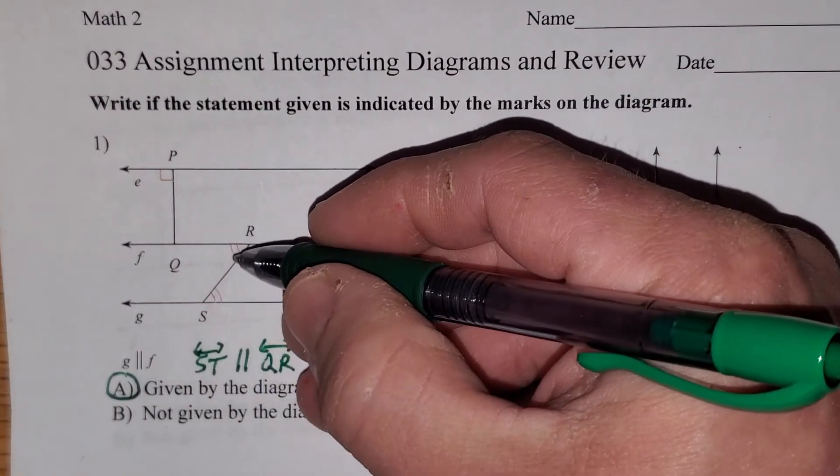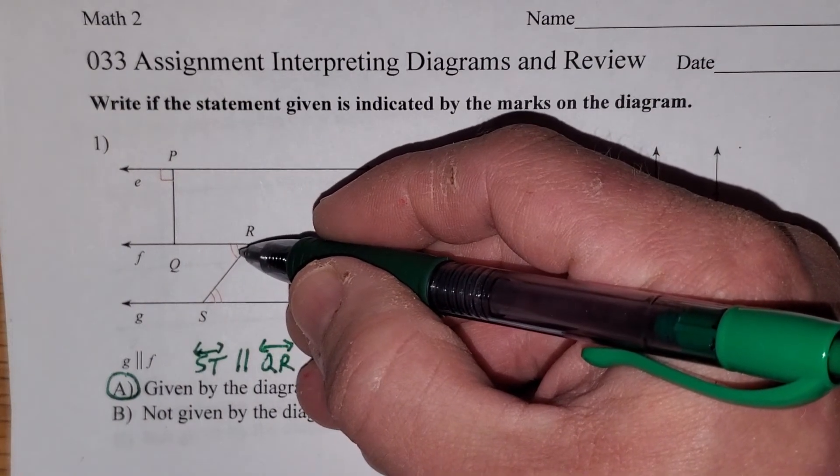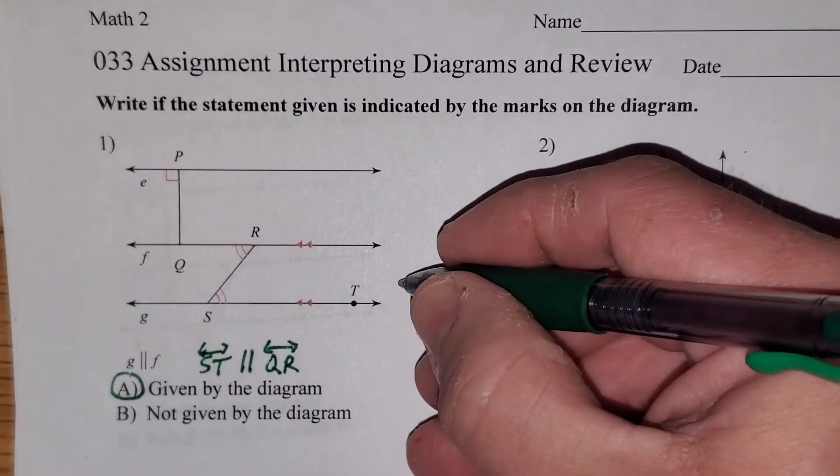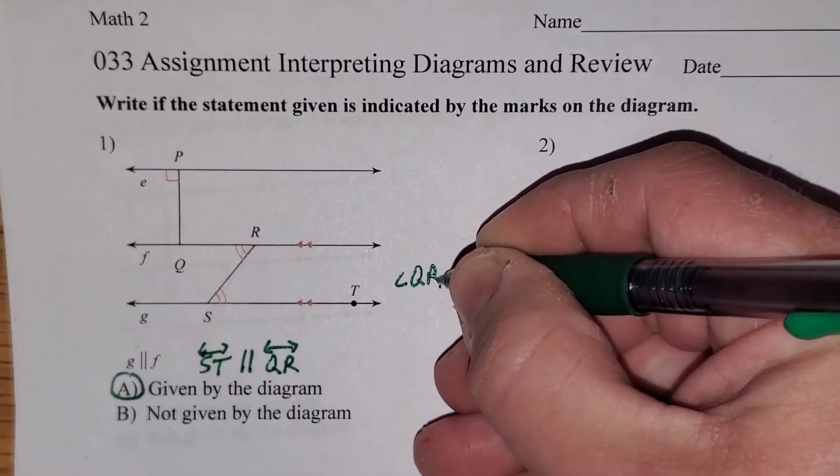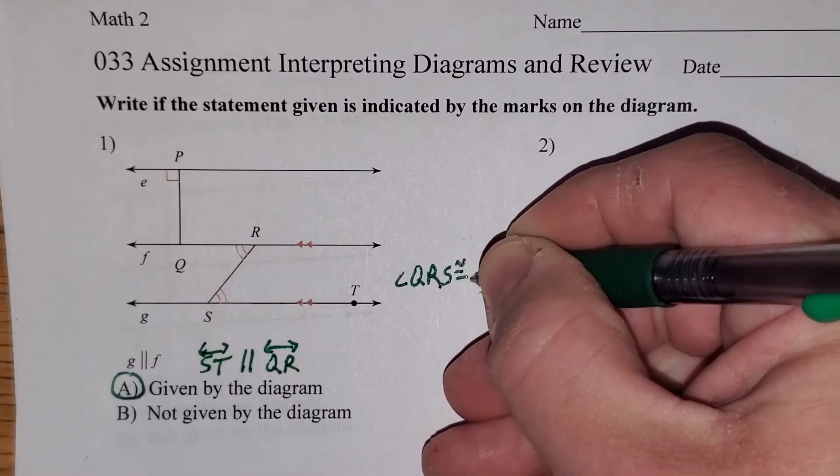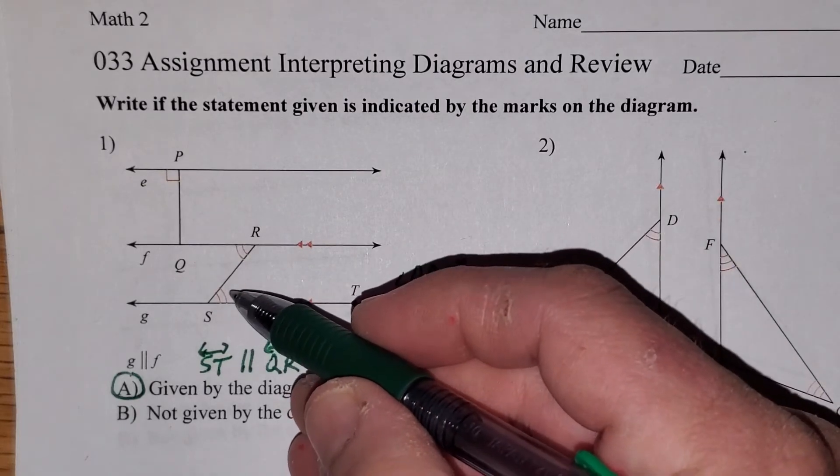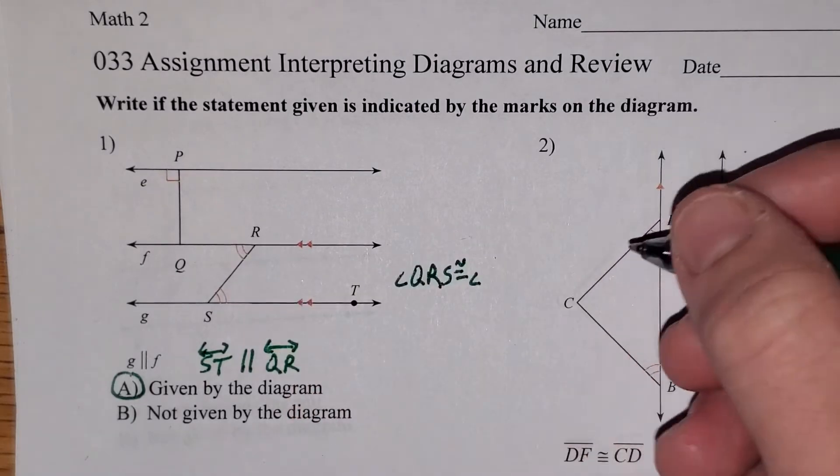Things that we can assume. We could assume that angle QRS, this angle right here, is congruent to angle TSR, they are marked as such.